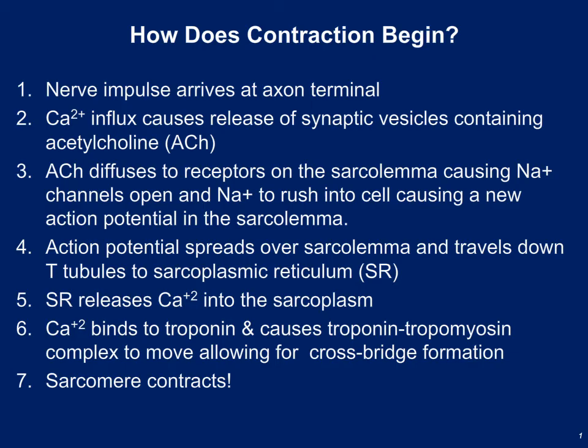Now that we know how cross bridge formation happens, we're going to talk about the electrical and chemical events necessary for this to occur. This process happens in seven steps. I'm going to go through this step by step — this process would be an excellent candidate for one of those diagram-and-describe questions on exams. Be sure you can both draw and diagram the steps necessary for sarcomere contraction.